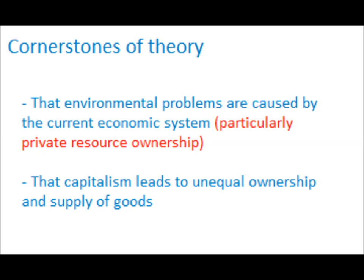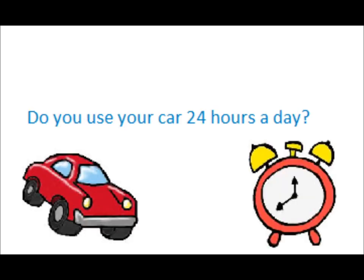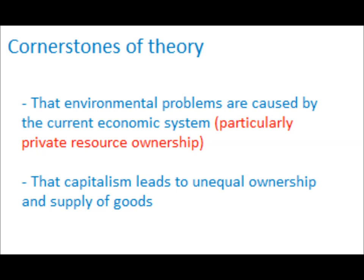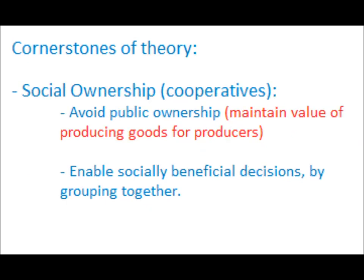The cornerstones of anti-capitalist economics are that environmental problems are caused by the current economic system, particularly private resource ownership. As a result of everybody having to own their own things, far more is produced than is actually required — for example, do you use your car 24 hours a day? Capitalism also leads to unequal ownership and supply of goods, and anti-capitalist economists point to the differences in development between nations as an example. Social ownership also appears as a cornerstone of anti-capitalist economics — partly as the opposite of private ownership, but also as a way of avoiding public ownership, to maintain the value of producing goods for producers, as it is still possible for a producer to make a profit by selling one thing to two or three people.